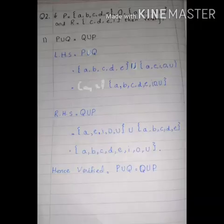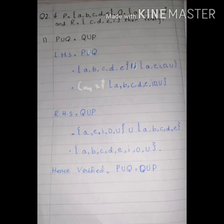Question number 2 is: if P equals ABCD, Q equals AEIOU, and R equals CDEI, then verify. We have three sets given: P, Q, and R.